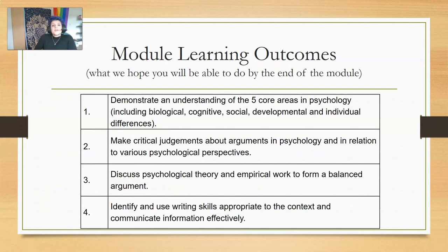So what are the learning outcomes for this module? Each module has several learning outcomes, and for this module we have four. The first is to demonstrate an understanding of the five core areas in psychology — biological, cognitive, social, developmental, and individual differences.